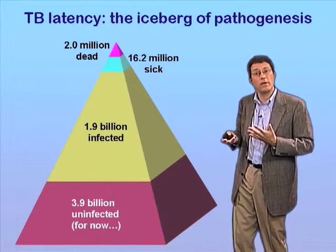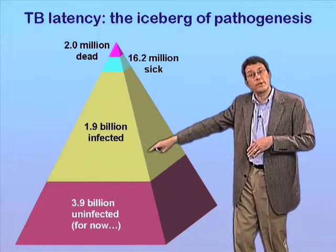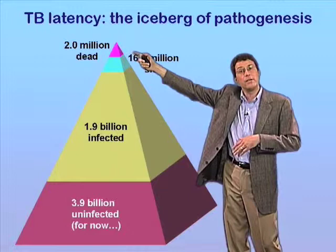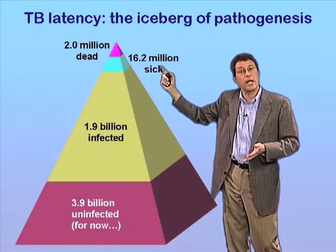In fact, the bulk of the problem — the bulk of the iceberg — that is below the waterline is what's going to sink your ship if you run into it. It's much the same in the case of tuberculosis. We tend to focus on what we can see, what's obvious, which is the 2 million or so deaths attributable to TB each year. But that number is quite small compared to the number of active cases of tuberculosis at any given time, which is in the range of 16 to 20 million.